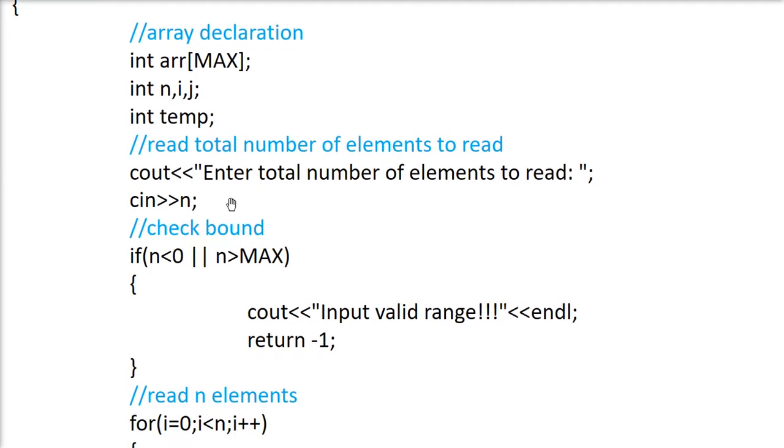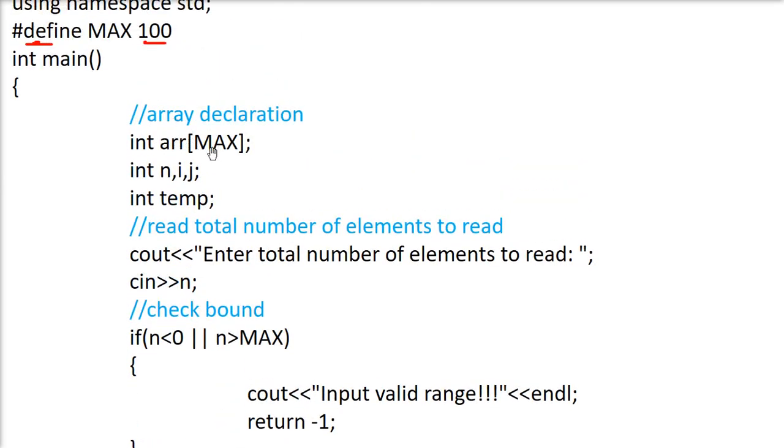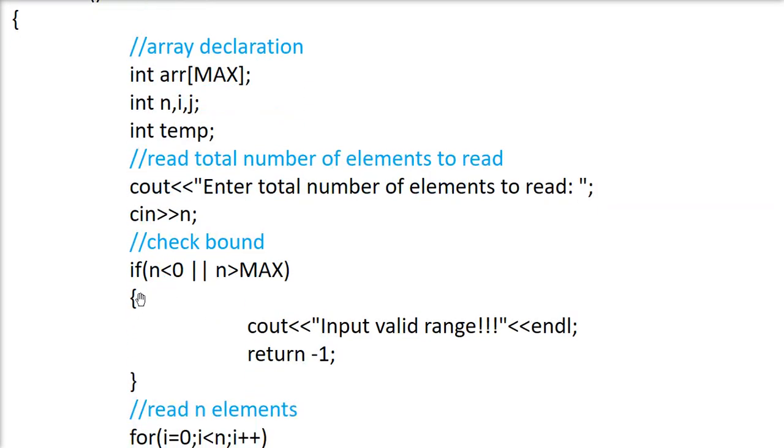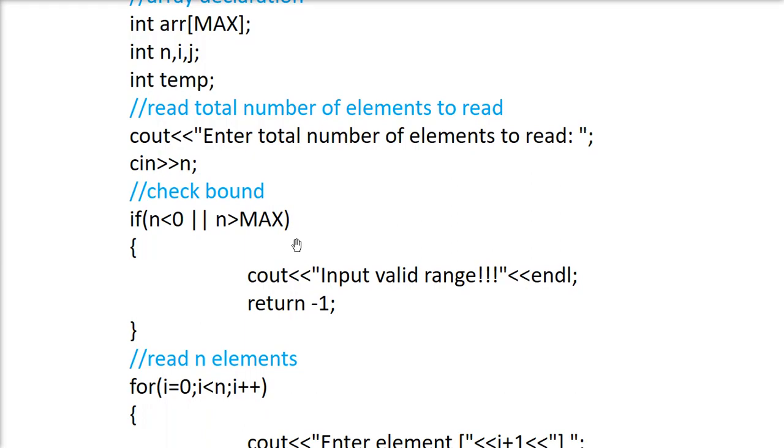Now we have to check the bound. The array size is only 100. So if he goes below, this n is below 0 - say he gives minus 13, this is not acceptable. Say he gives 130, that is also not acceptable. He has to give between 1 and 100. Otherwise, we will check the bound and say return minus 1. This is not a valid range. So this is bounding check. Very important.